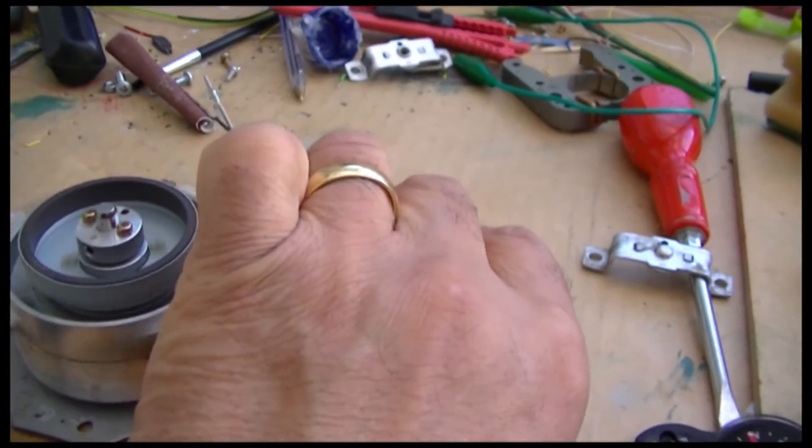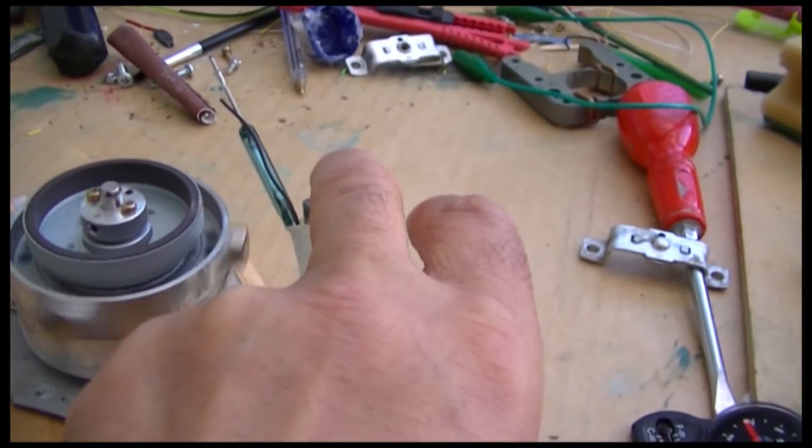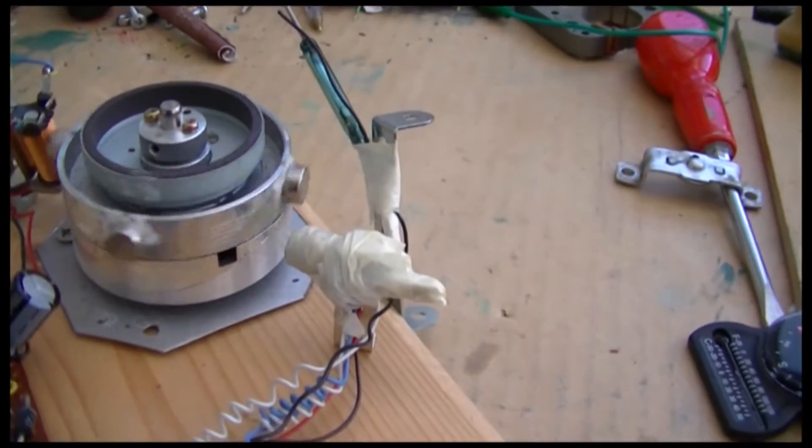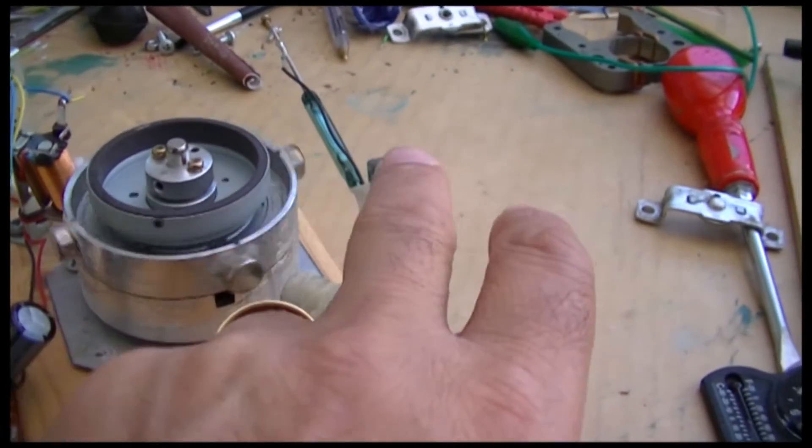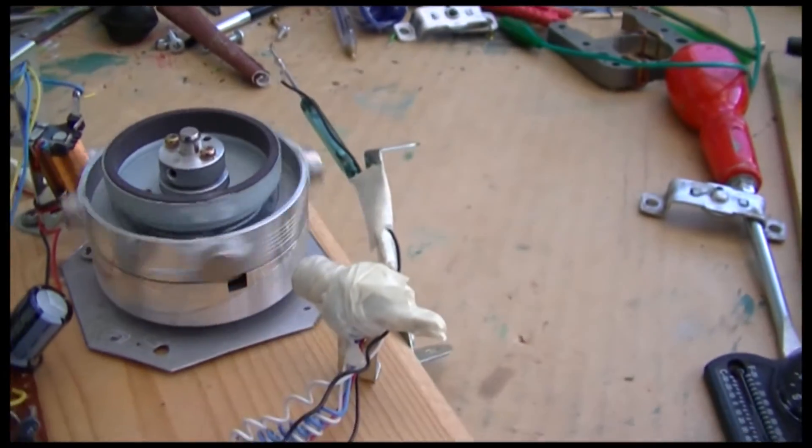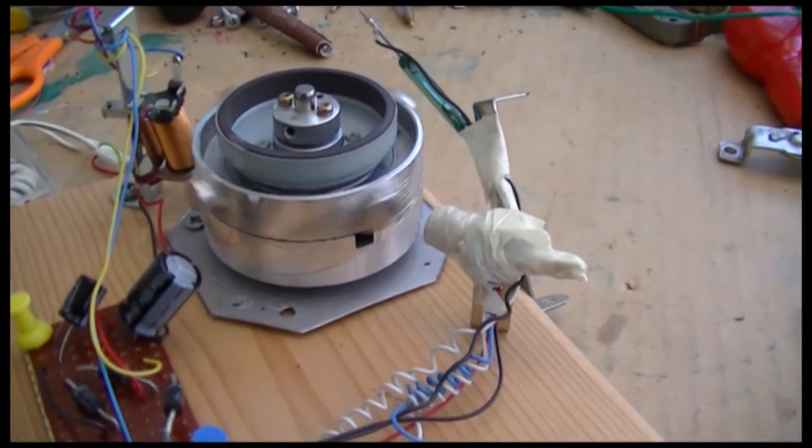If I lift the reed switch up, it stops working. Put it down a bit. Now it's running on 6 volts.